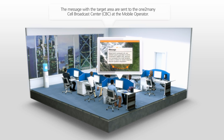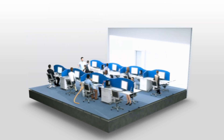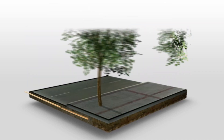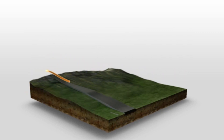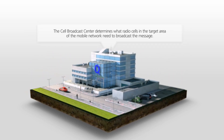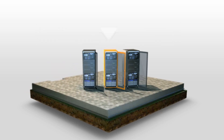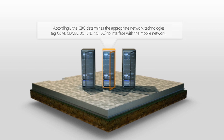The message, along with the target area, is sent to a cell broadcast centre, or CBC, at the mobile operator. The cell broadcast centre determines which radio cells in the target area of the mobile network need to broadcast the message. Accordingly, the CBC determines the appropriate network technologies to interface with the mobile network.